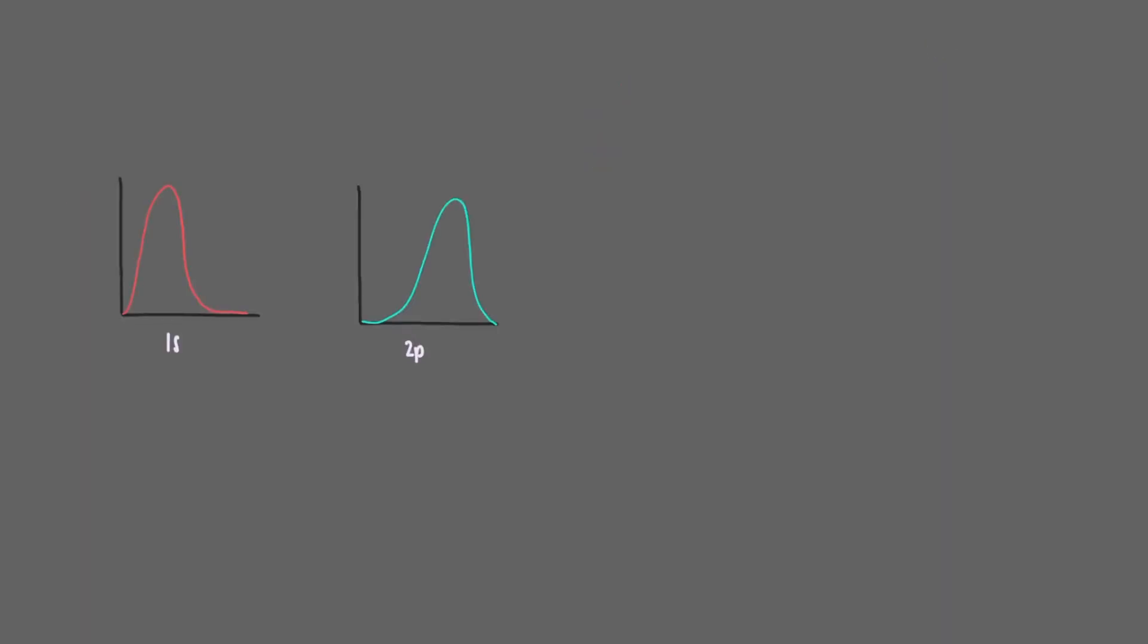Now let's take a look at the 2p electron wave. It has one radial loop and one nodal plane, so it looks like this. When we put the 1s and 2p electron waves on top of each other, it looks like this.